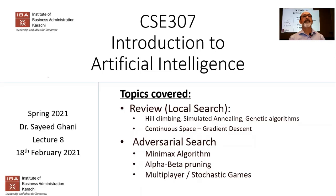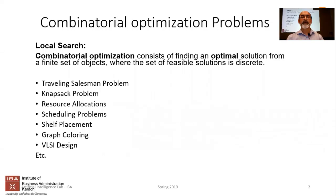Today's topic is adversarial search, which involves a multi-agent scenario. Up till now we've been talking about a single agent, but in adversarial search you have two adversaries — two agents playing against each other. All games from tic-tac-toe to chess are games where you have two agents, and you could also have more than two agents. Two agents also counts as multi-agent — anything more than one counts.